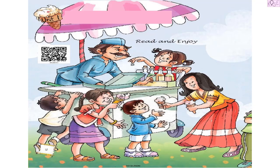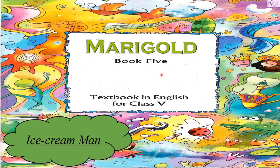Hello friends! Today we are going to do an activity based on this beautiful picture. It has so many elements and we are going to explore all of them. This picture has been taken from your book Marigold Class 5, from the chapter 'Ice Cream Man', and it is on page number 2.